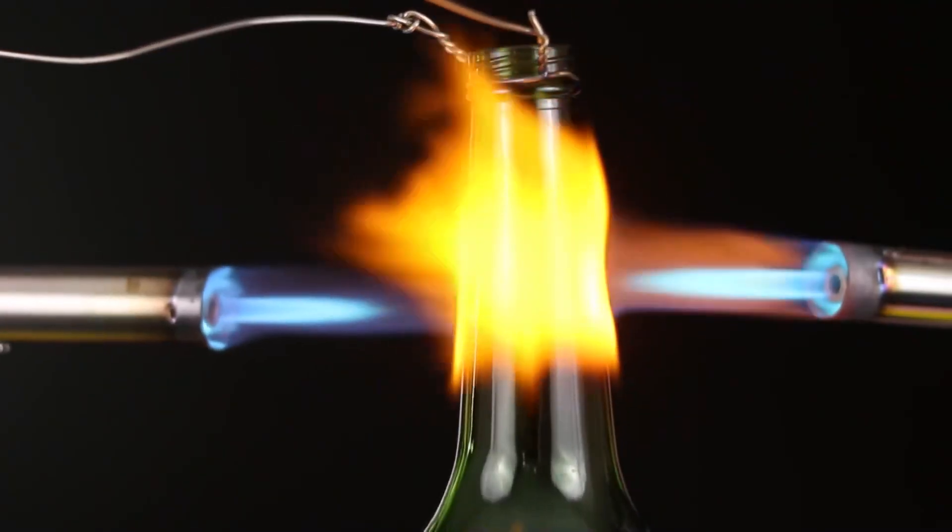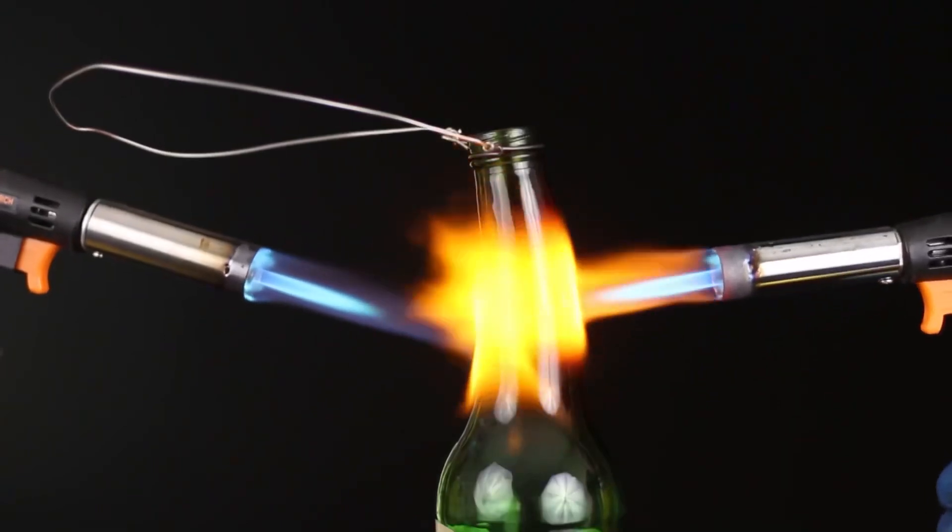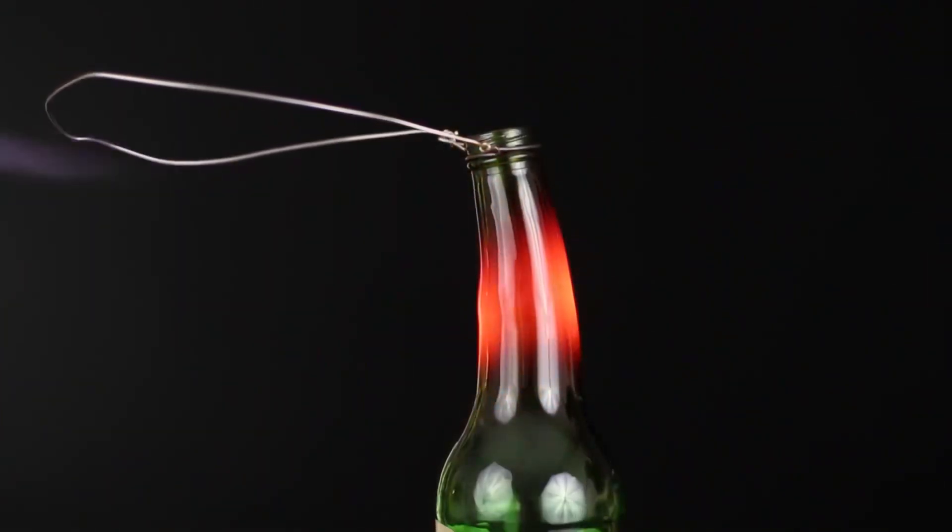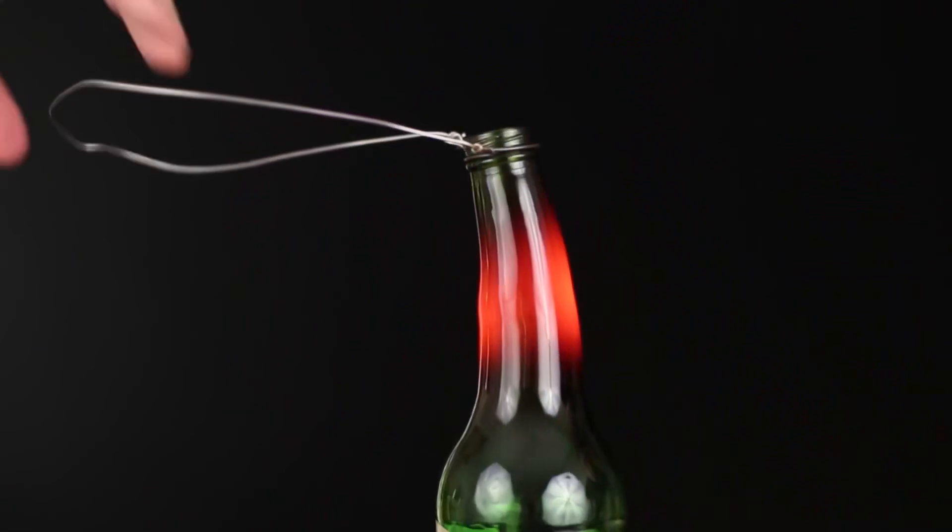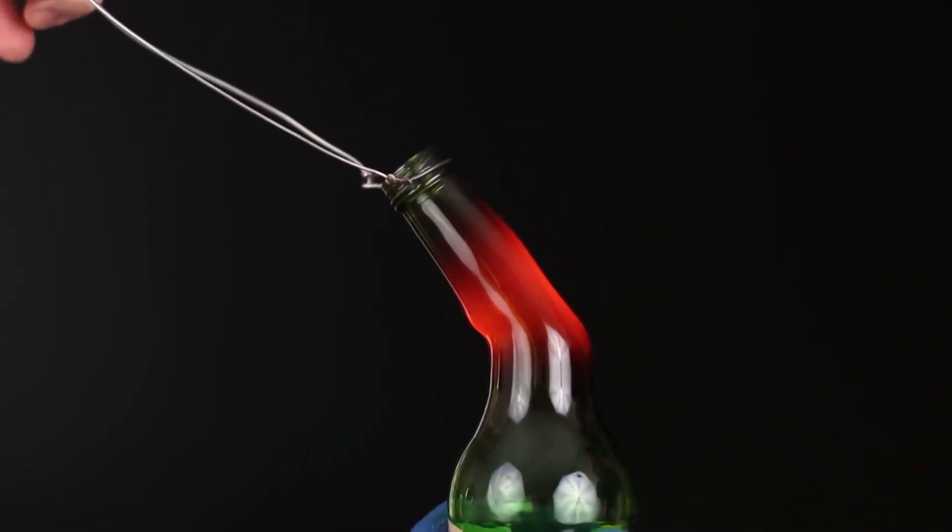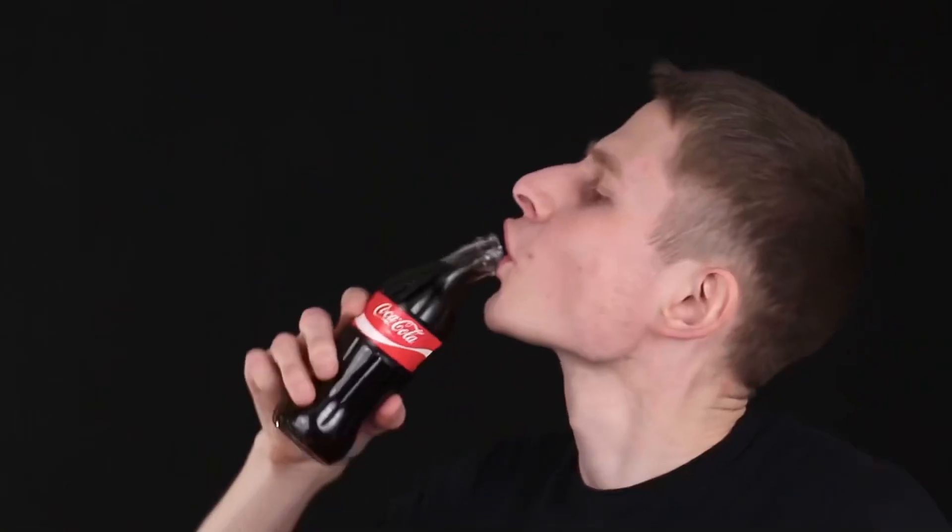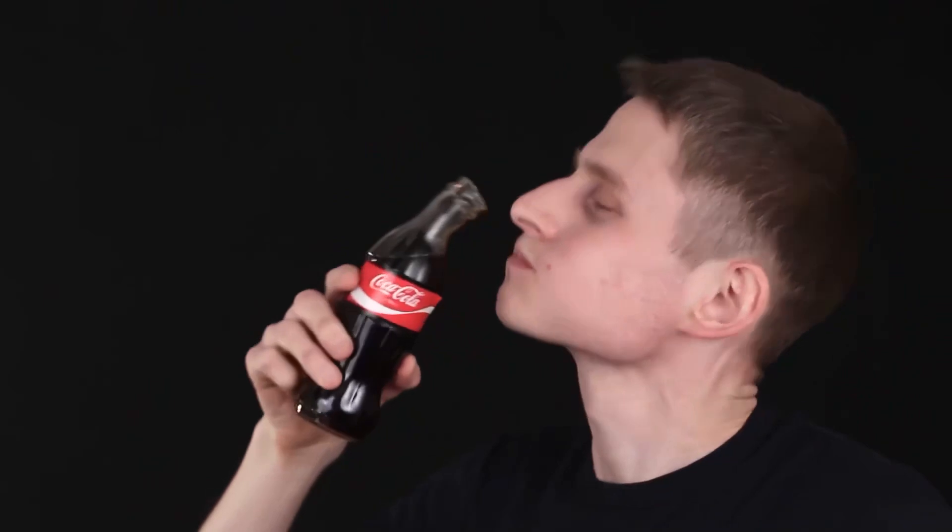Now heat the bottle with the burner until the glass gets hot and becomes soft and malleable. Now it remains to pull the handle in the right direction. Let the glass cool down. Look at the fancy bottles we've made. Why, it's even more convenient this way.